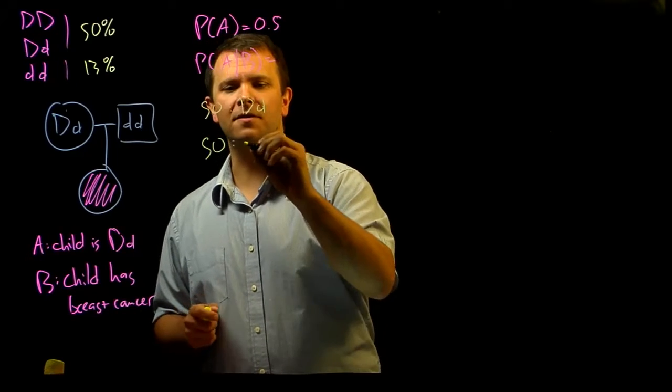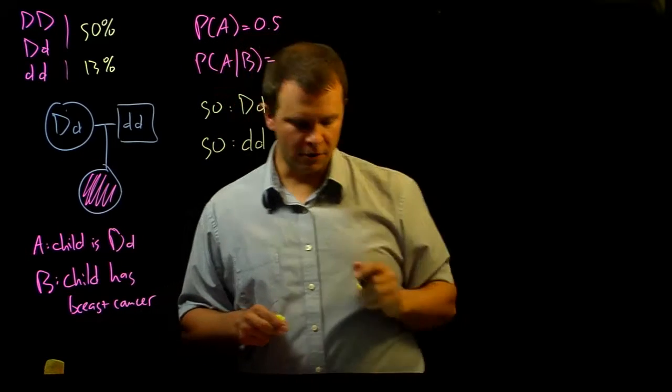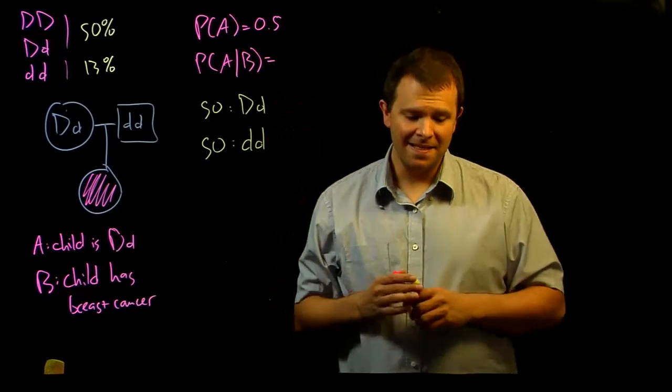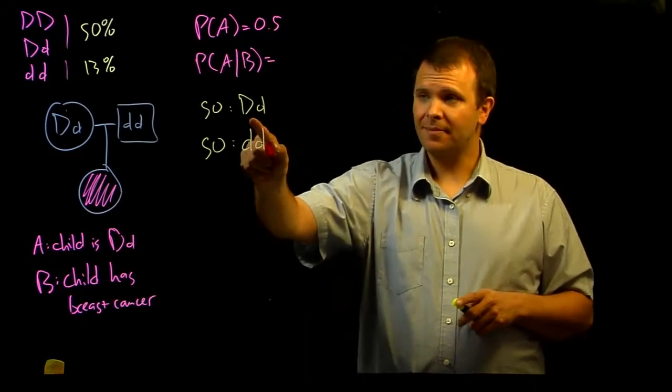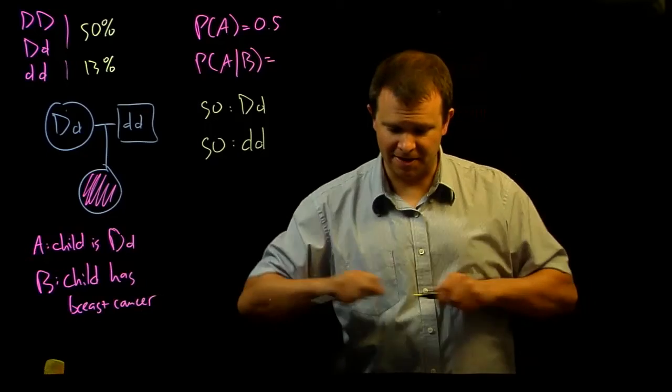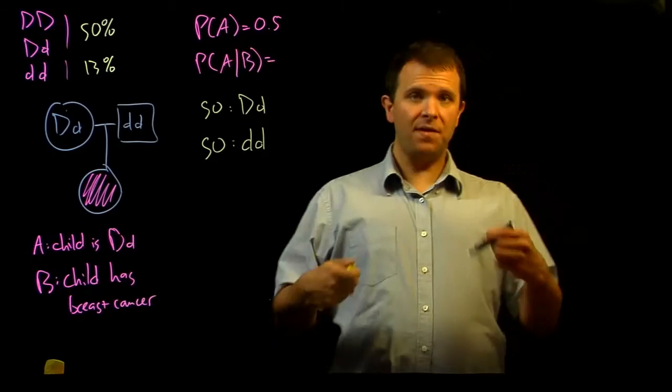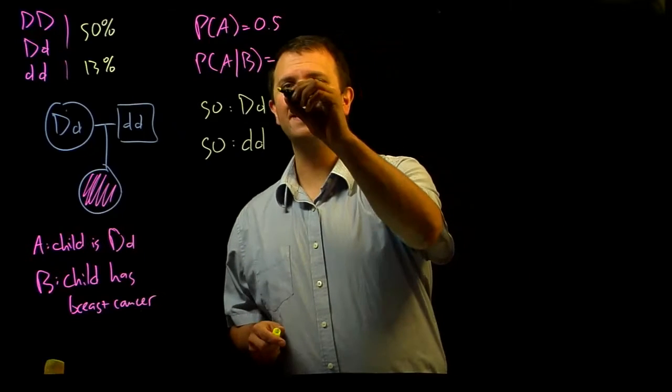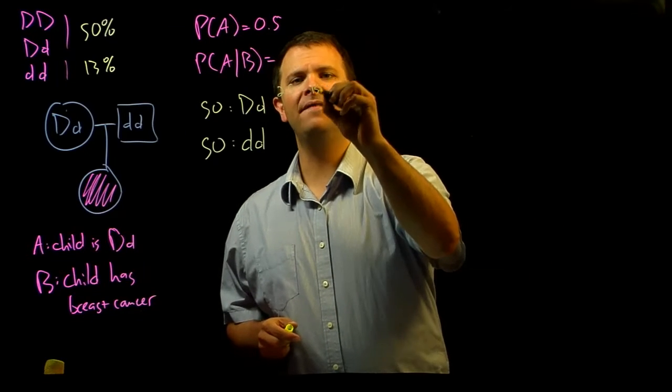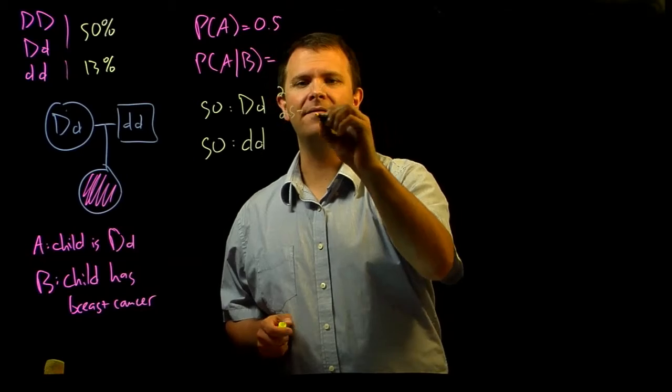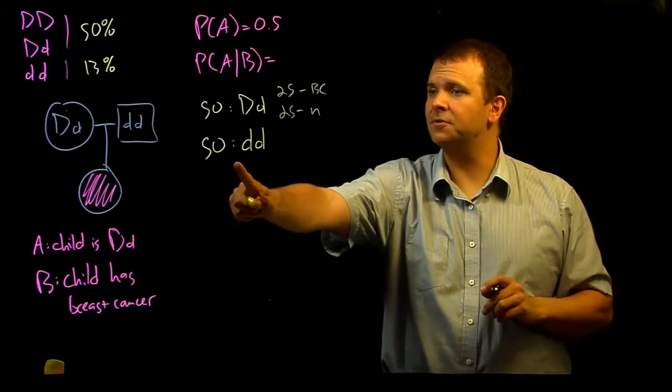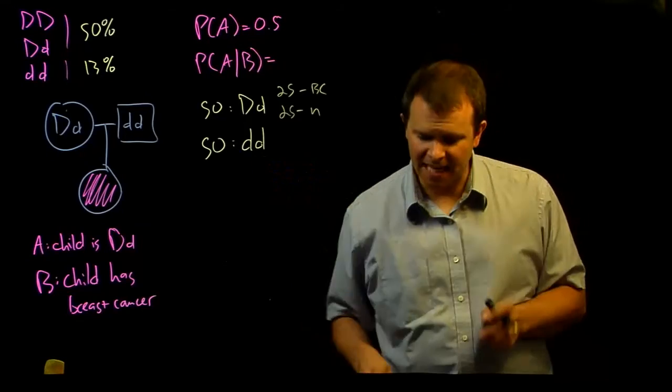and 50 of those children are going to be homozygote recessive. Of the 50 that have the heterozygote genotype, we know that 50% of them will develop breast cancer. So, 25 will have breast cancer and 25 will not.